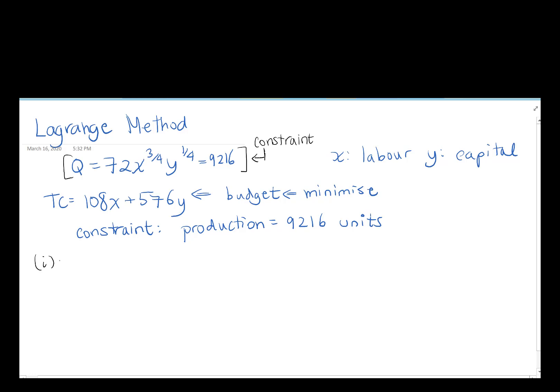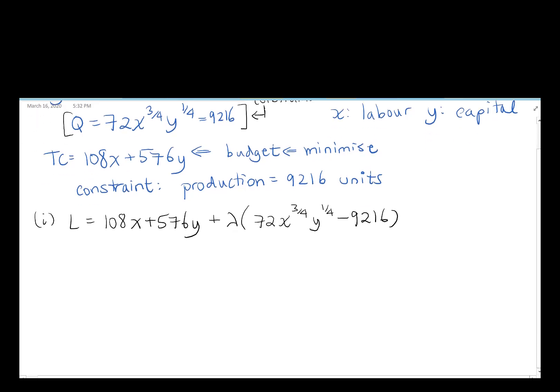Step one, as per always, set up your Lagrange function, which is going to be the following. Take what you're looking to optimize, which in this case is that total cost, and then add to it lambda times by my constraint, which is now 72x^(3/4)y^(1/4) minus 9216. So step one, set up that Lagrange.